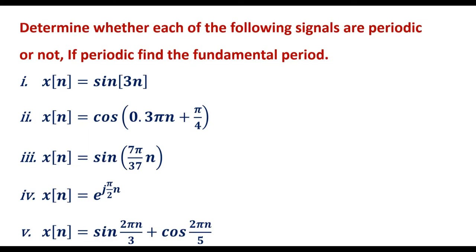In this video, let me check whether the given signals are periodic or not. Determine whether each of the following signals are periodic or not. If periodic, find the fundamental period. Here, five different signals are given. We are supposed to verify whether these signals are periodic or not, and if periodic, find the fundamental period.